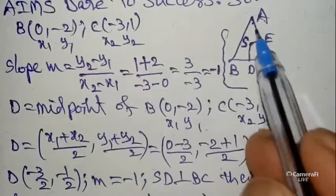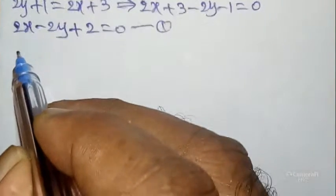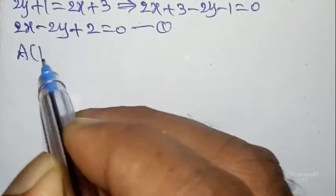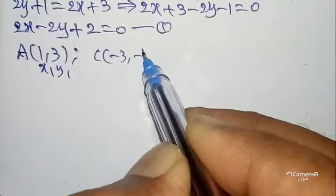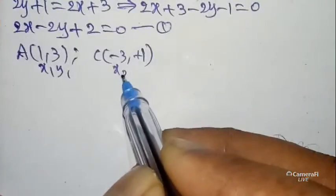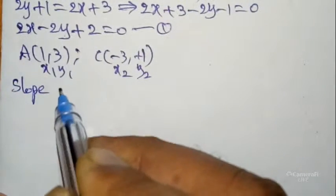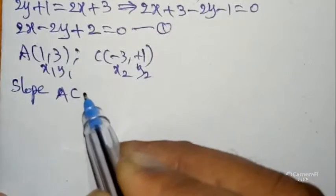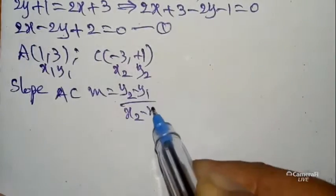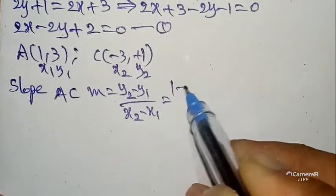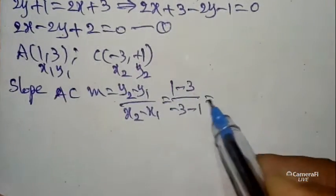Now, SA is perpendicular to AC. Write point A = (1, 3) as (x1, y1) and C = (-3, 1) as (x2, y2). Find the slope of AC: m = (y2 - y1)/(x2 - x1) = (1 - 3)/(-3 - 1) = -2 / -4 = 1/2. So the slope of AC is 1/2.